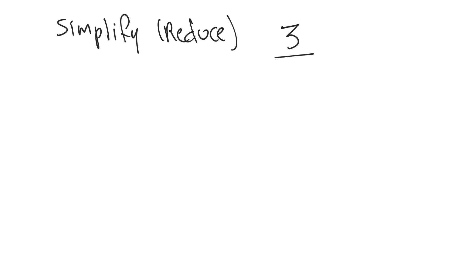3 over 6. So what we want to do when simplifying or reducing fractions is find a number that you can divide both the numerator and the denominator by, and the biggest number possible.